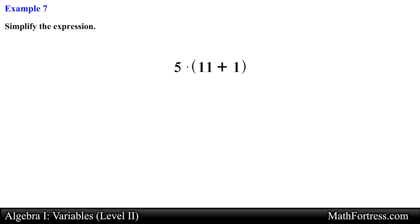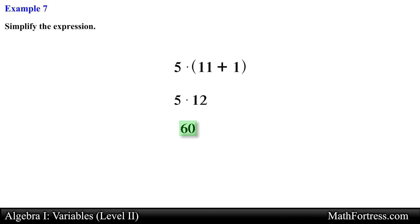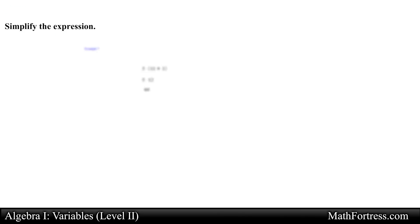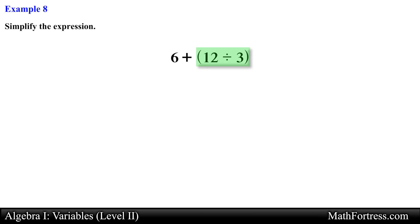Let's simplify the expression 5 times the quantity (11 plus 1). The expression within the parentheses is simplified first: 11 plus 1 is equal to 12, and then we multiply that by 5, which equals 60. Next: 6 plus the quantity (12 divided by 3). Working with the parentheses first, 12 divided by 3 is equal to 4, and we add that to 6, which equals 10.